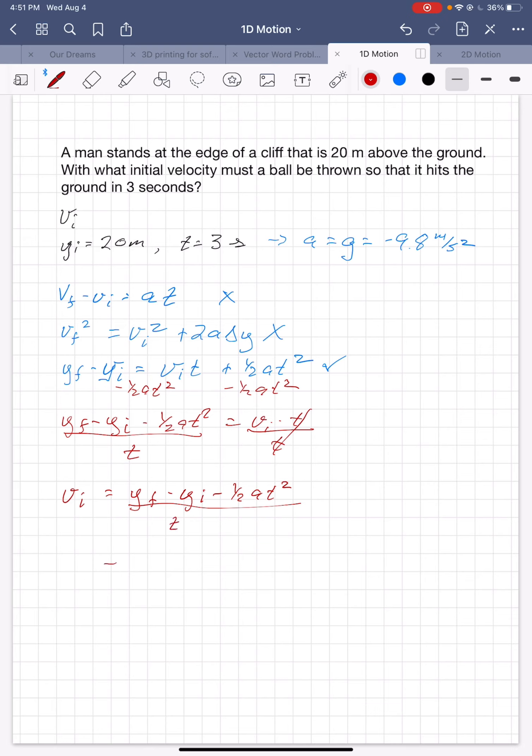And now I can plug my numbers in. So this is 0 because I hit the ground, minus 20 meters because that's initially how high I am, minus 1 half negative 9.8 meters per second squared because G is going down, times 3 seconds squared, all divided by 3 seconds. All right. And that gives me an answer of 8.03 meters per second.